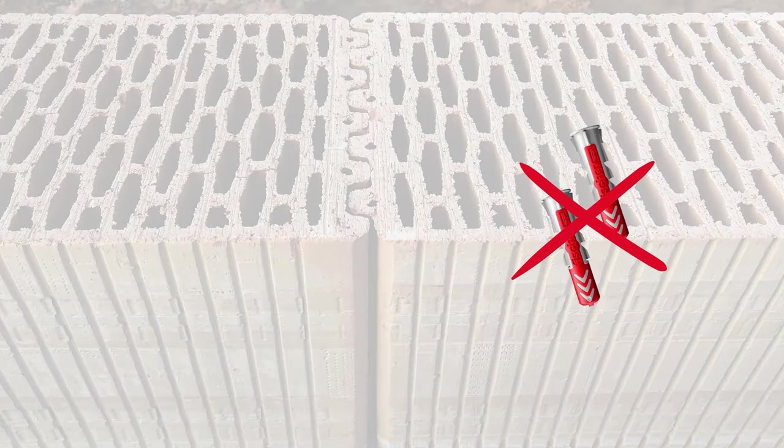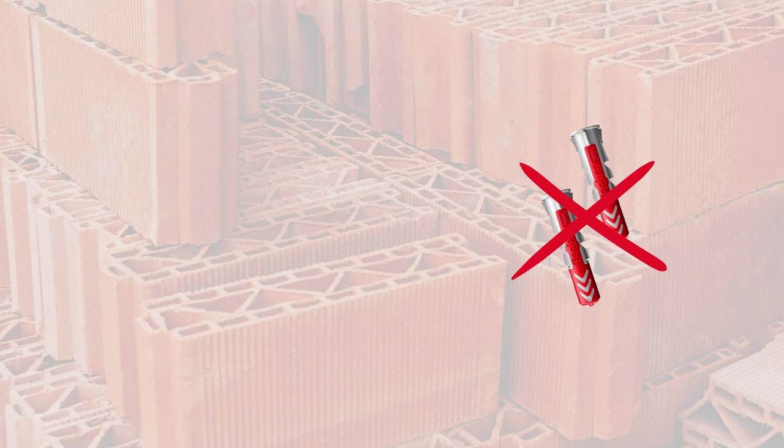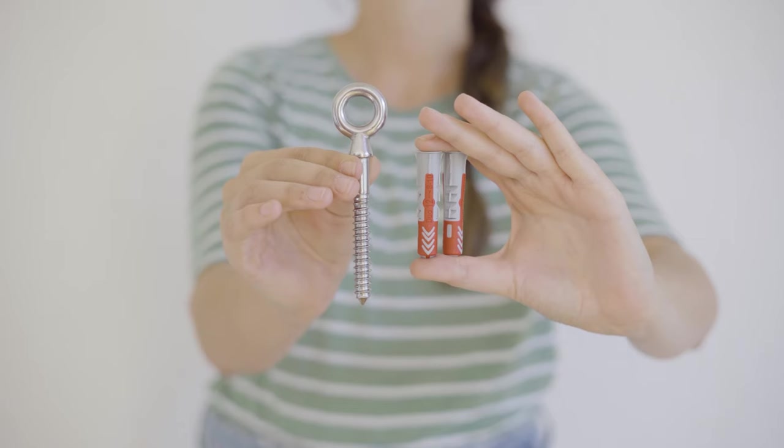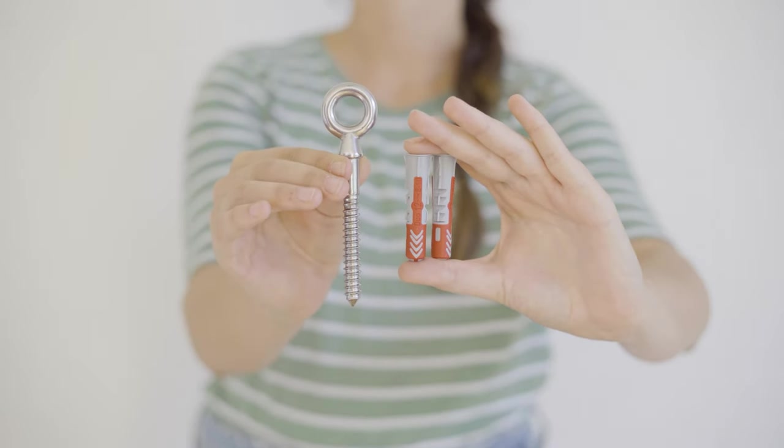The plastic plugs would not be strong enough in this case. Instead, we would have to use injection mortar for mounting. However, since our example deals with a concrete ceiling, plastic plugs are sufficient.